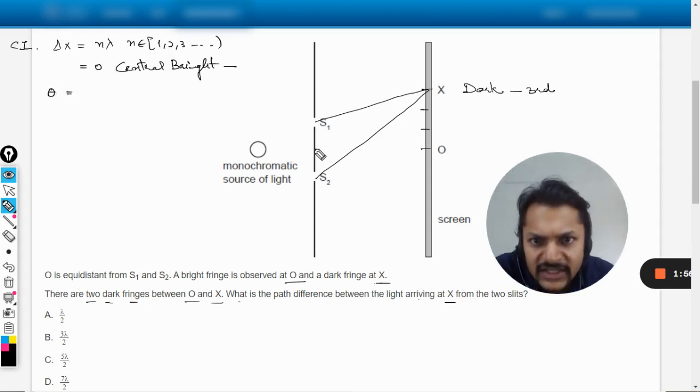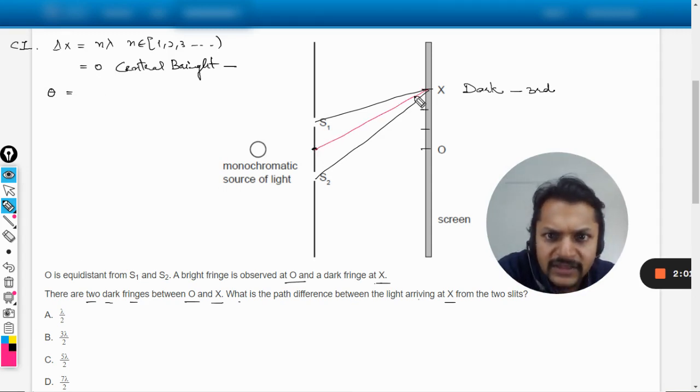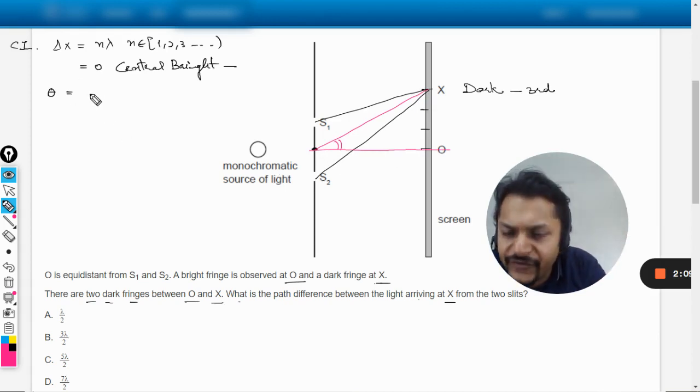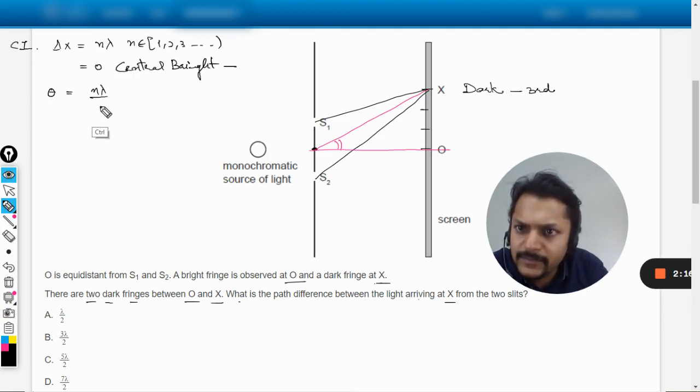If you want theta, theta is the angle from the midpoint here. So if you're talking about the dark or the bright, whatever, we want to talk about this theta. In the case of dark I would be giving you, but for the bright fringes this comes out to be equal to n lambda by small d.